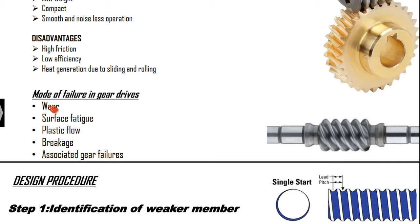Moving forward, we have to discuss the modes of failure in gear drives. This is not just applicable for the worm and worm wheel — it is applicable for all other types of gears because the failure mode is the same. The commonly classified types of failures are: wear, surface fatigue and plastic flow, breakage, and associated gear failures. Under wear, various sub-types are classified: moderate wear, critical or extreme wear, abrasive wear, corrosive wear, and scoring issues.